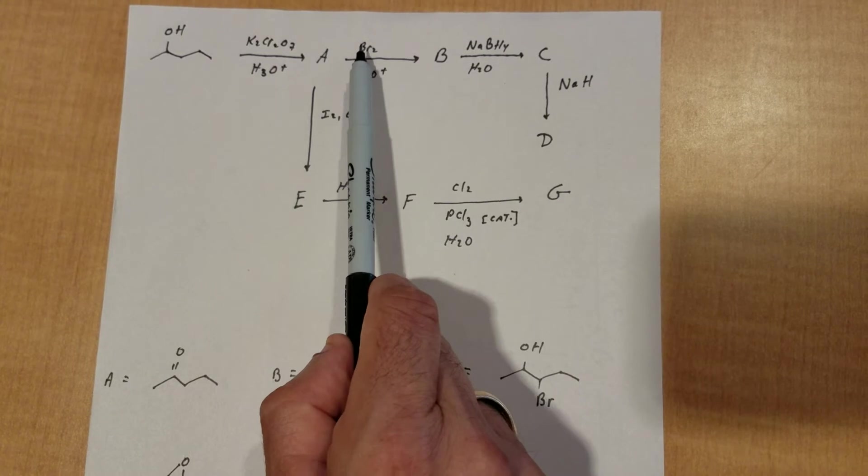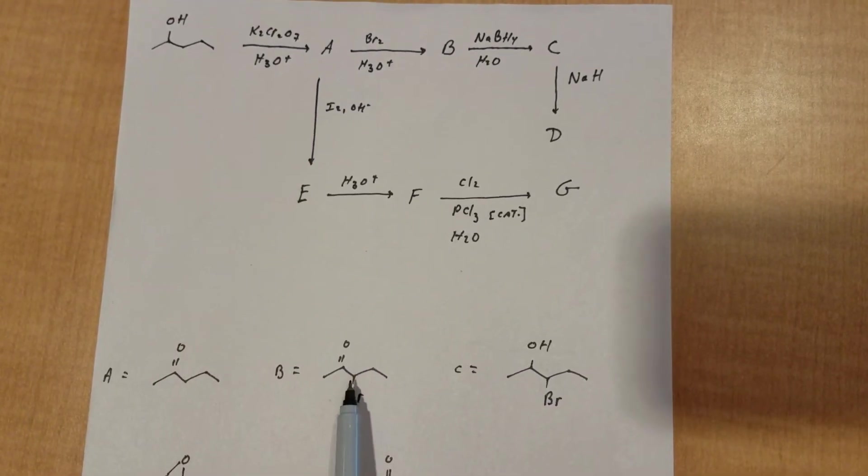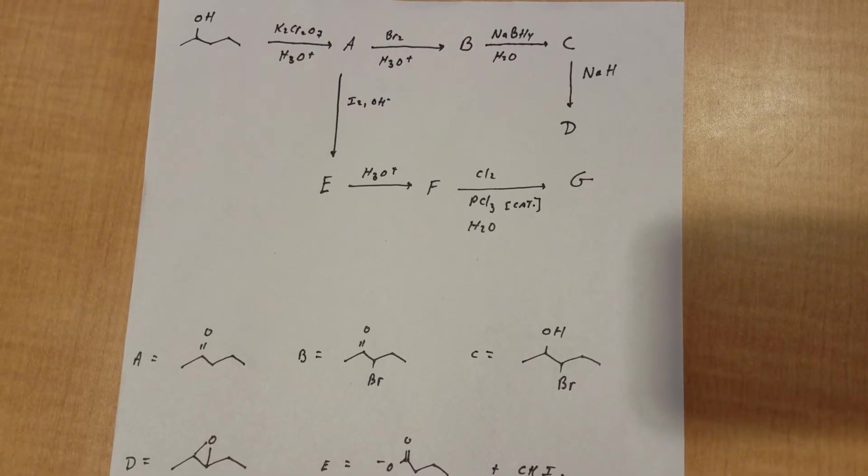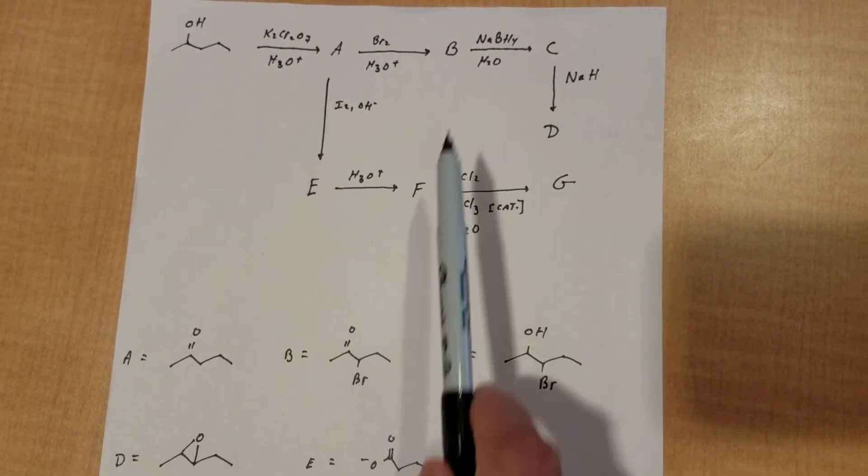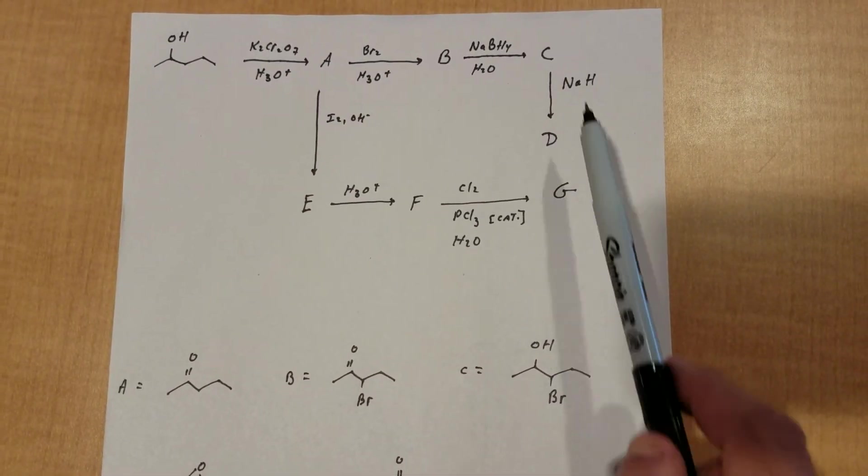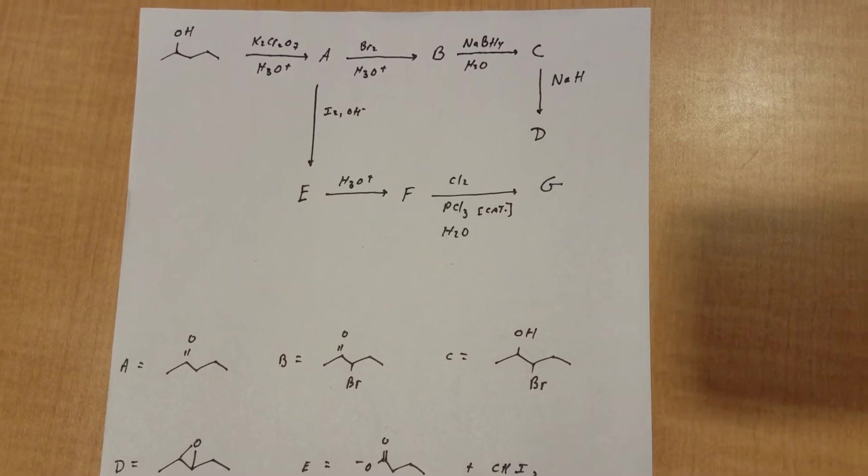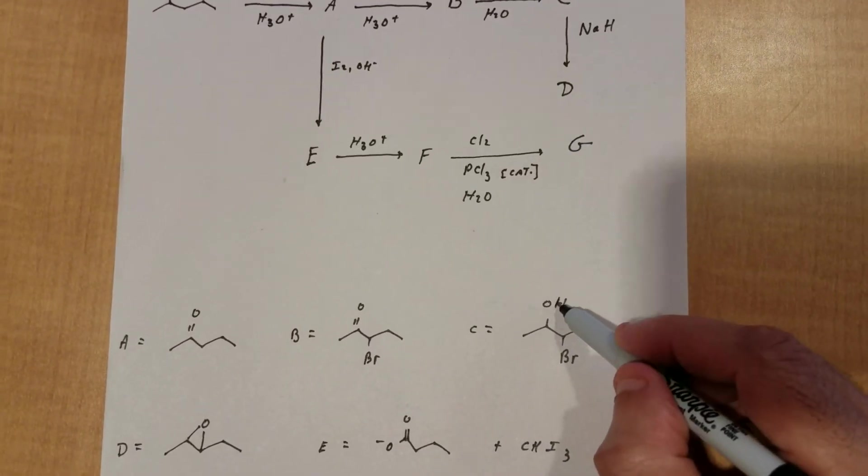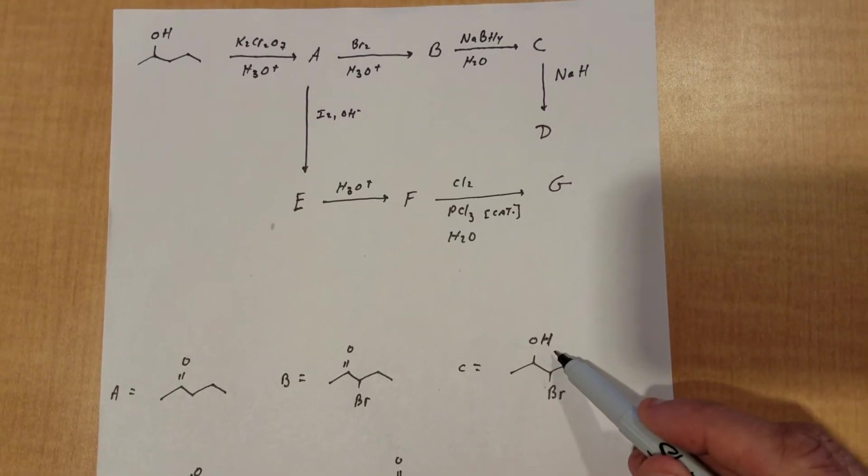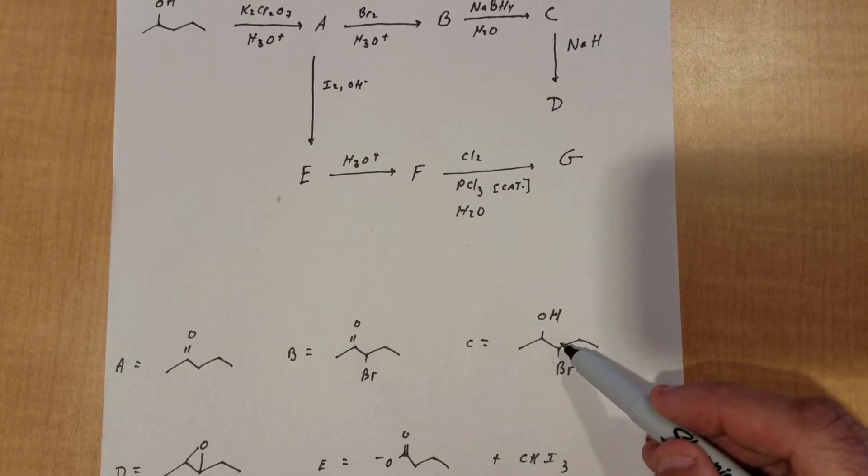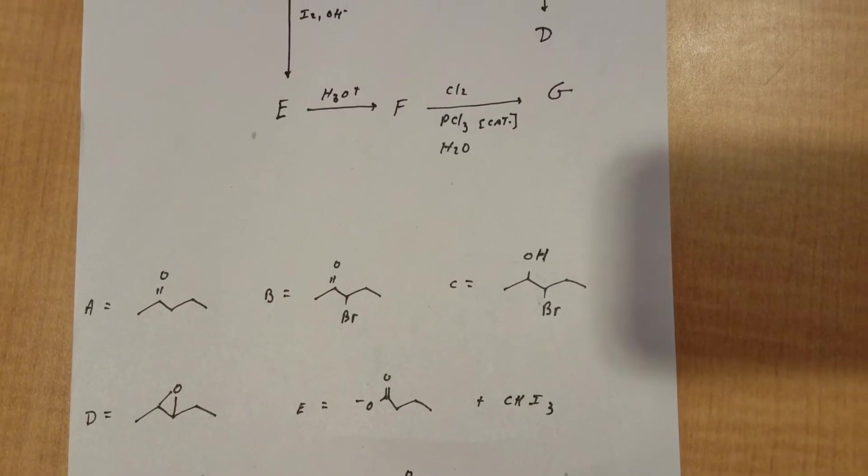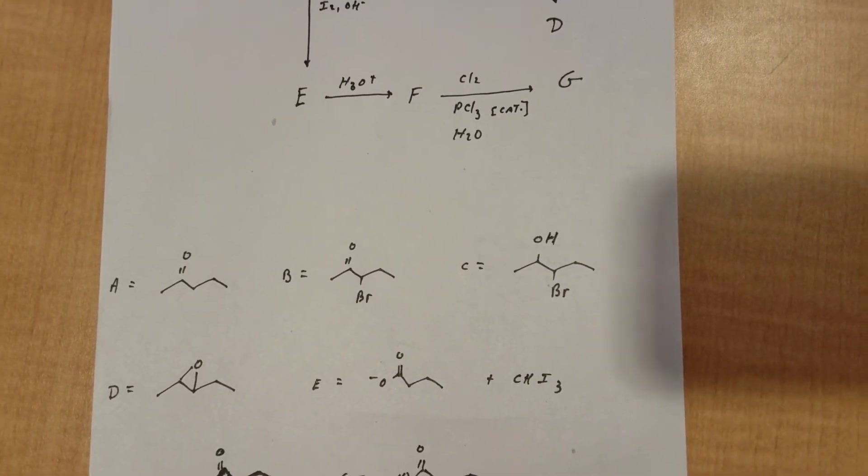From A to B, whenever you see you're halogenating with acid, go to the more internal carbon and replace OH with a Br. Then from B to C, that's just a simple reduction. Now it gets a little hard. From C to D, NAH, what's NAH going to do? It's going to remove off this hydrogen to give an O-, and then you're going to do a backside attack, what's called an intramolecular SN2, kick off the bromine, and give the epoxide. Wow. That's a hard one. That's hard.